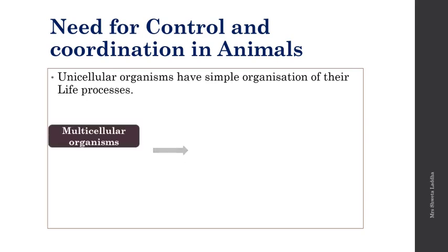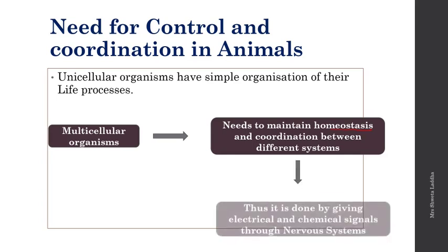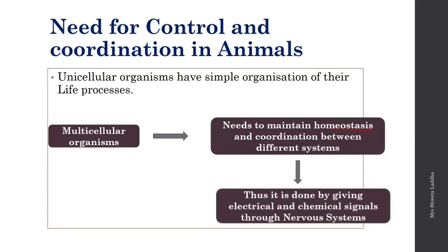In multicellular organisms, there are different organs and systems. Between these organs and systems there should be homeostasis and coordination so that every system works in harmony. This is done by electrical and chemical signals through the nervous system, along with the hormonal system — the endocrine system — which also plays a very important role in control and coordination.